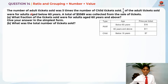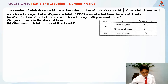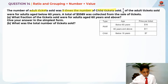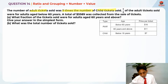The number of adult tickets sold was 5 times the number of child tickets sold. This means adult tickets were 5 times the number of child tickets, meaning adult was 5 units while child was 1 unit.